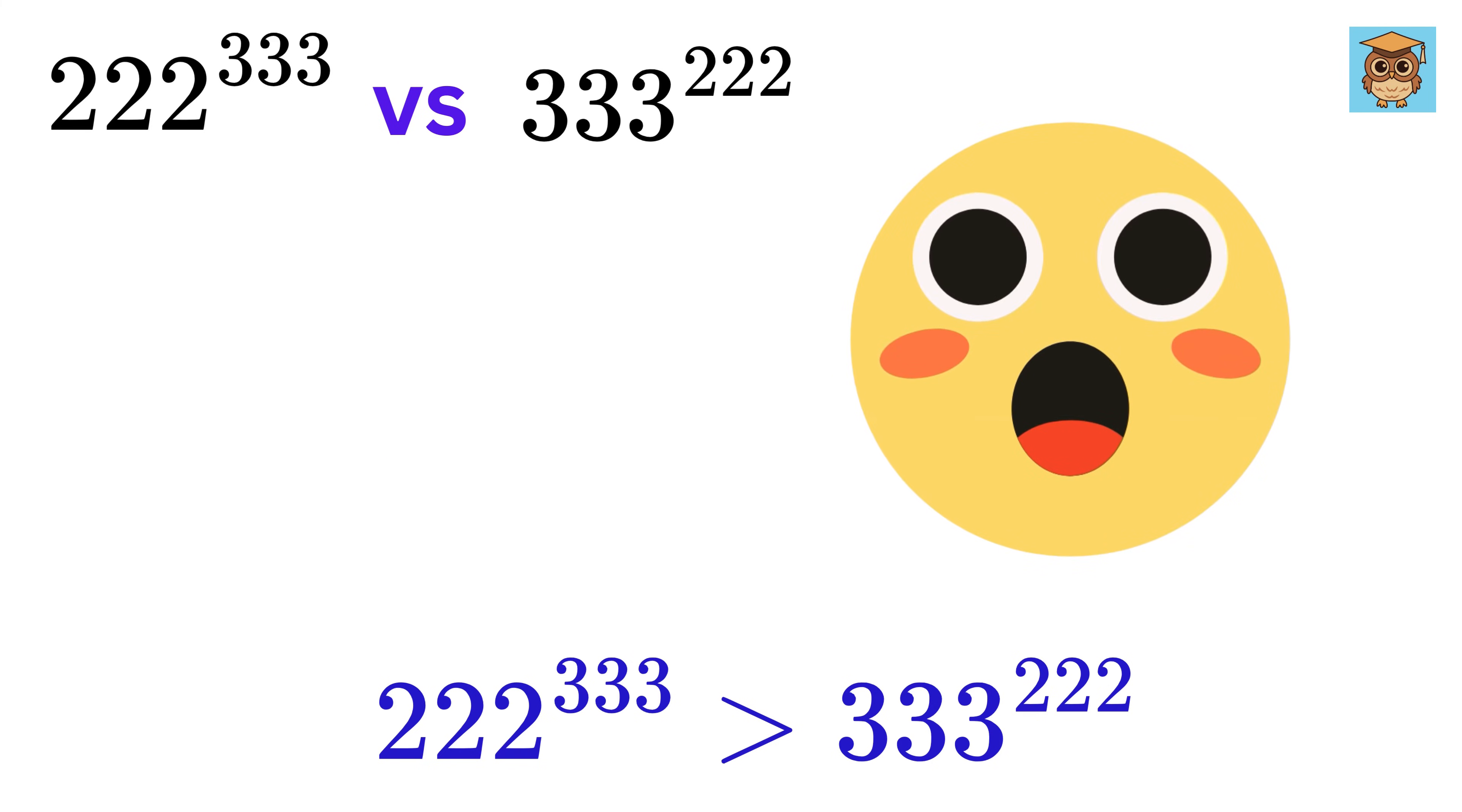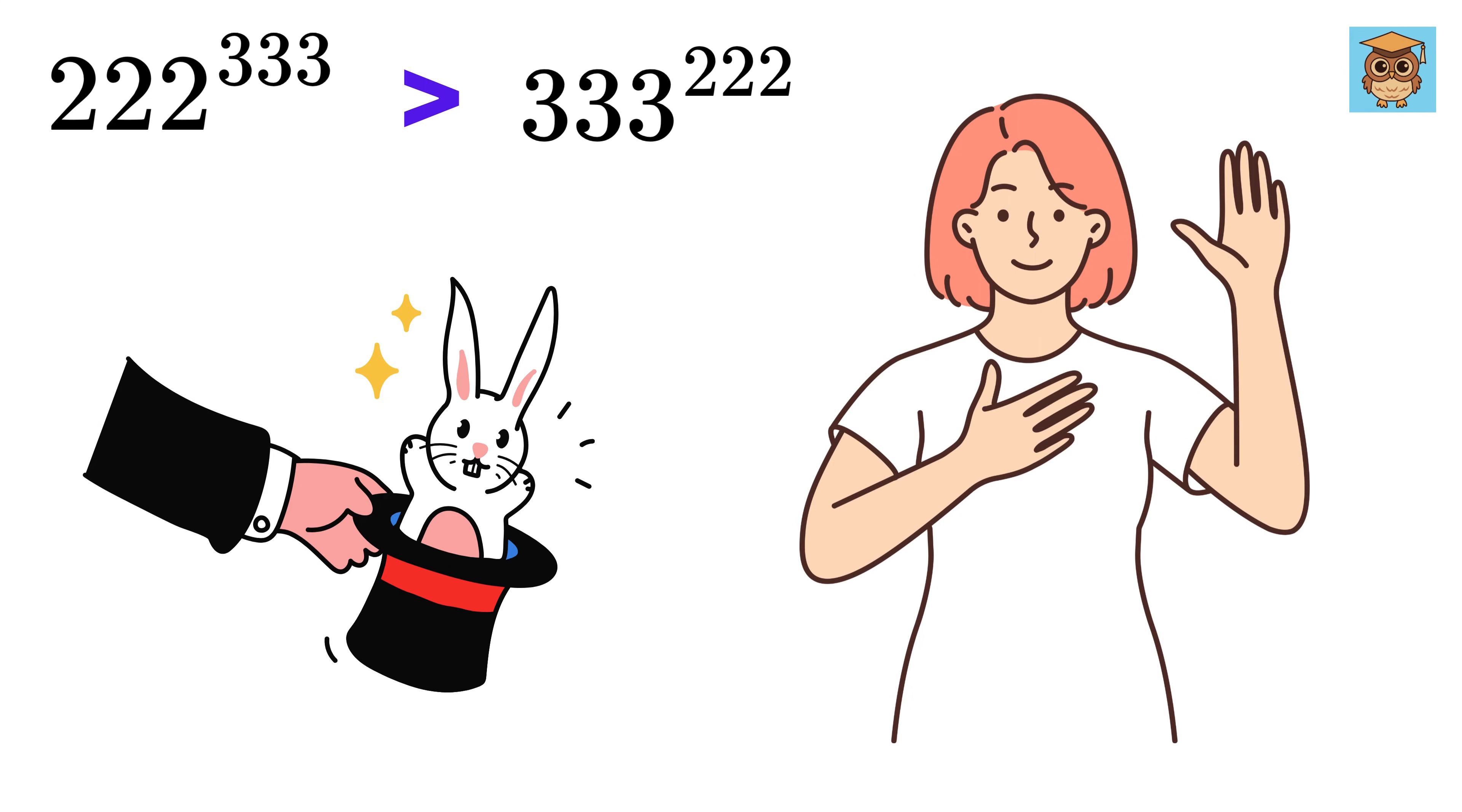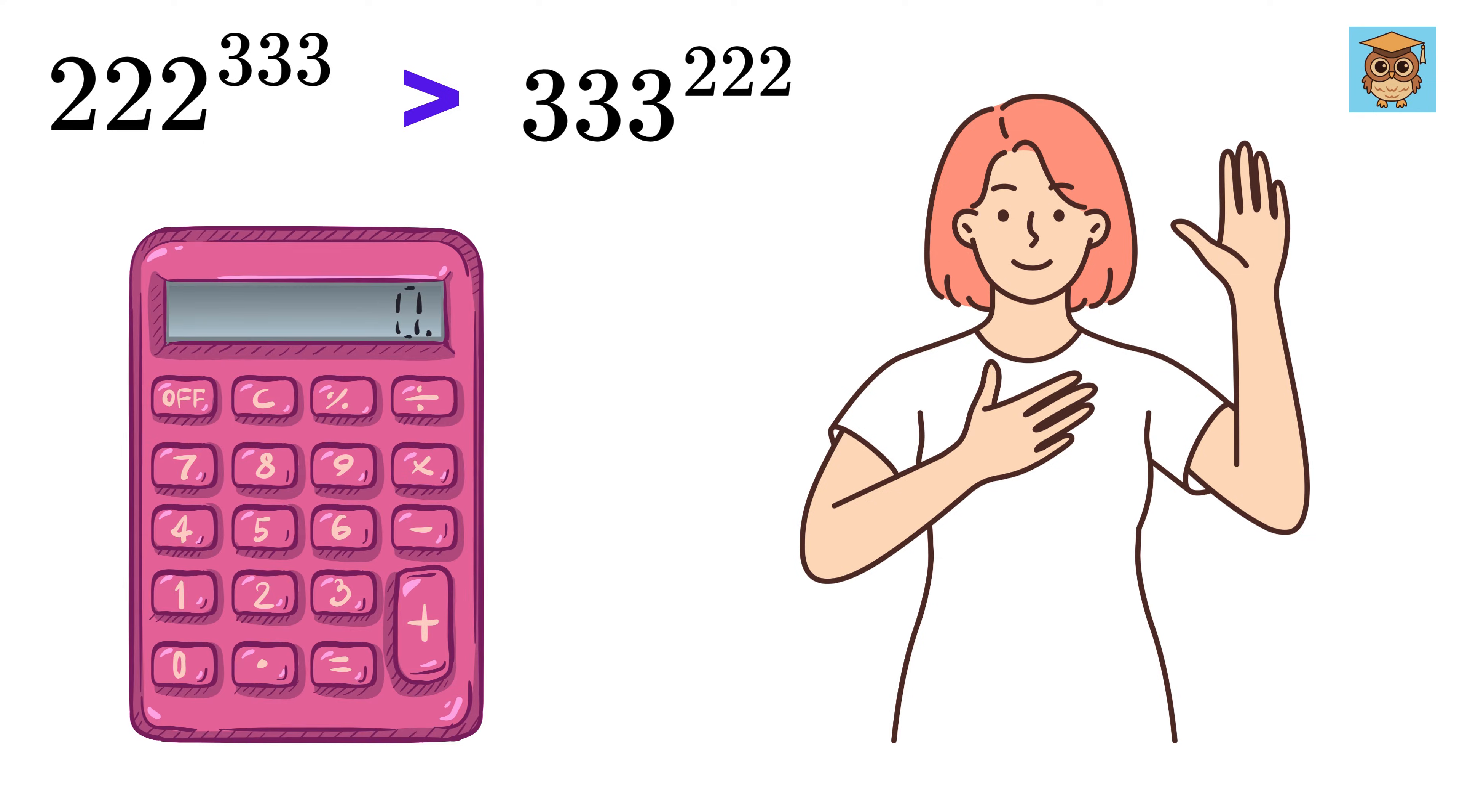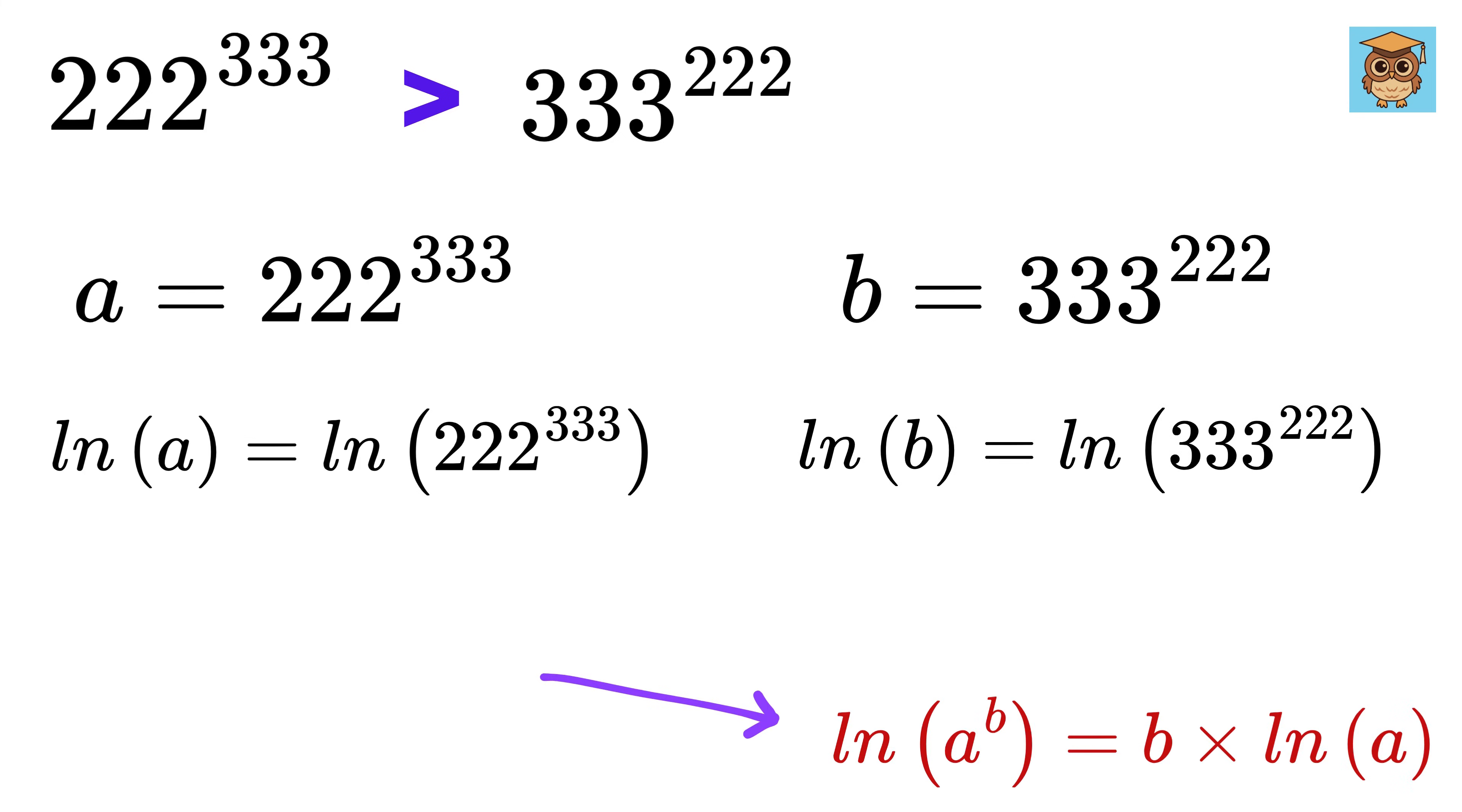That was simply amazing. Now, as I promised, I will show you a clever trick using which we can find this same result using a calculator. Write this as A and this as B. Now take the natural logarithm of both. Using this logarithm rule, we get ln of A as this and ln of B as this.